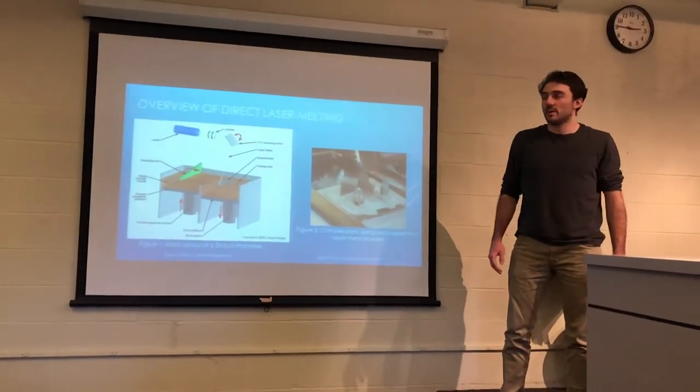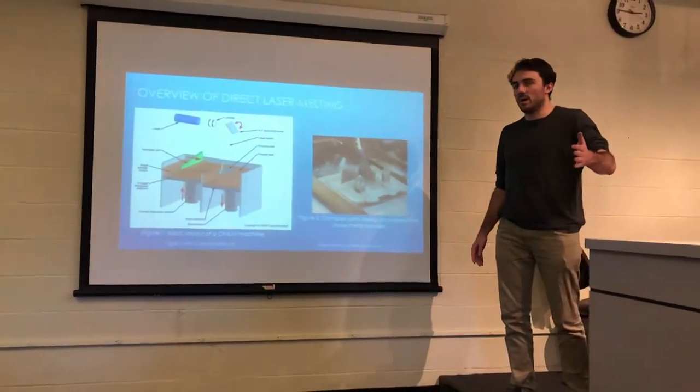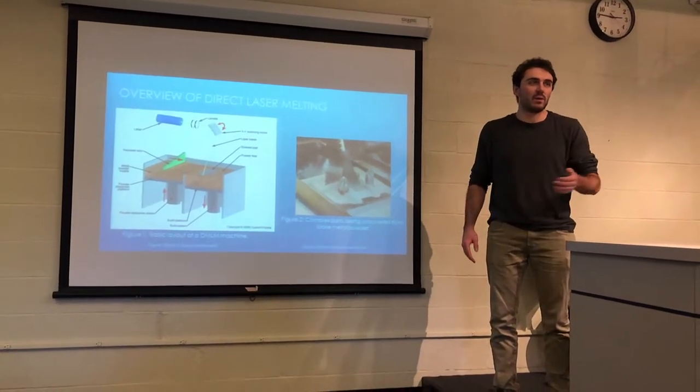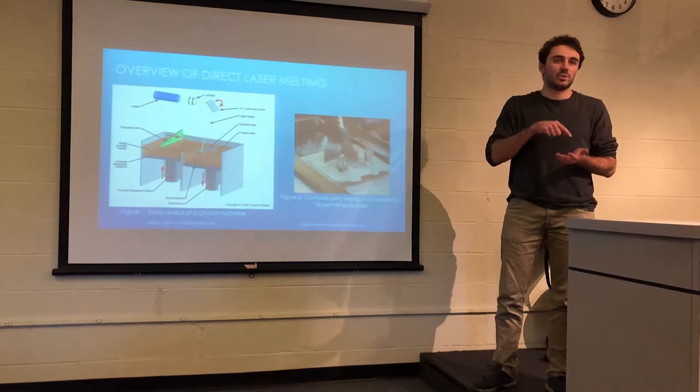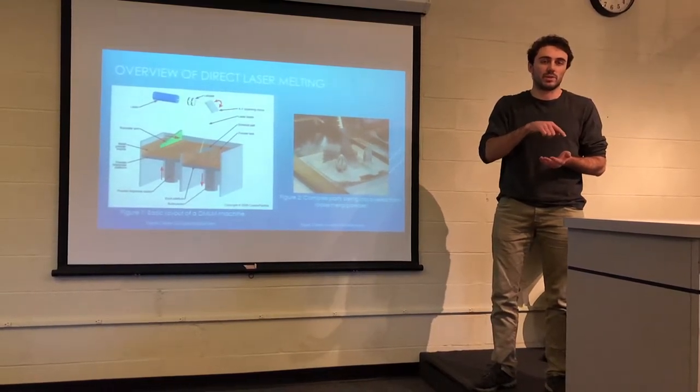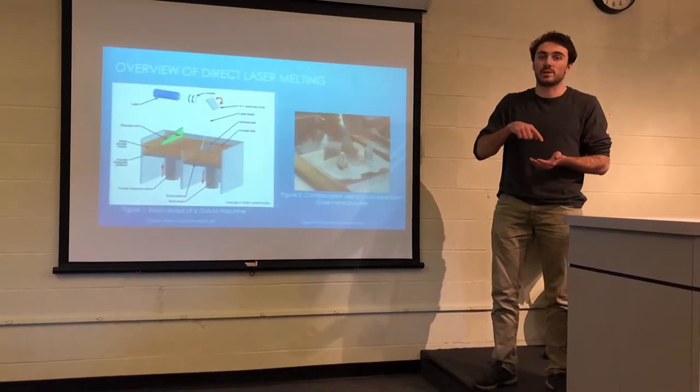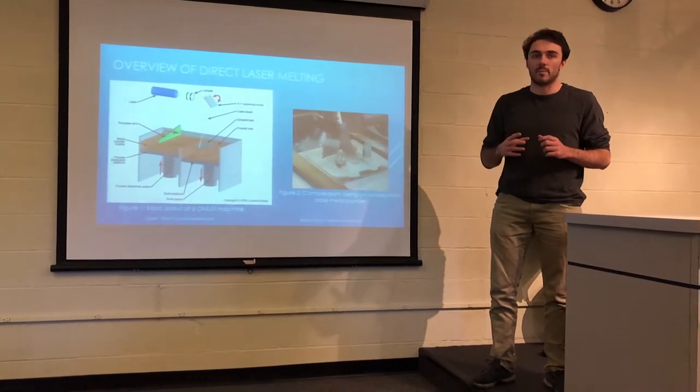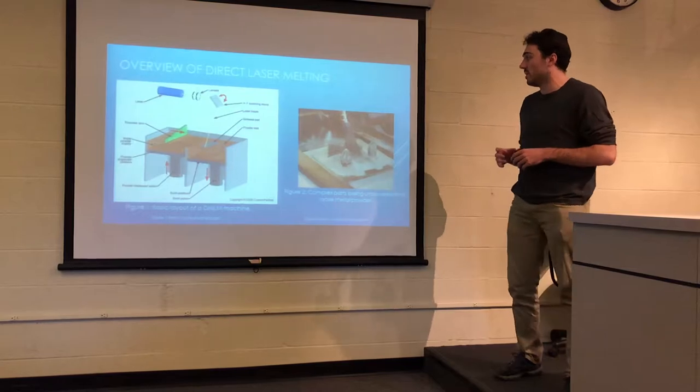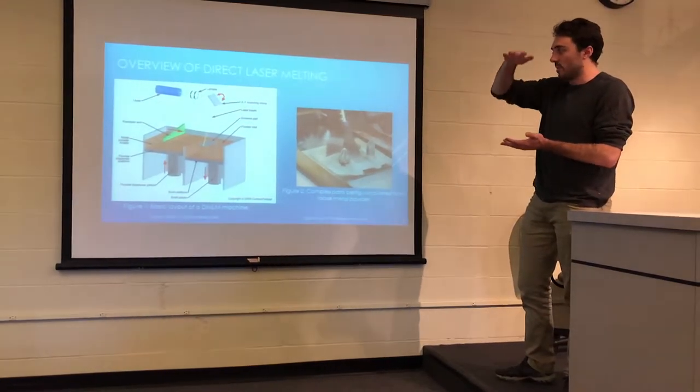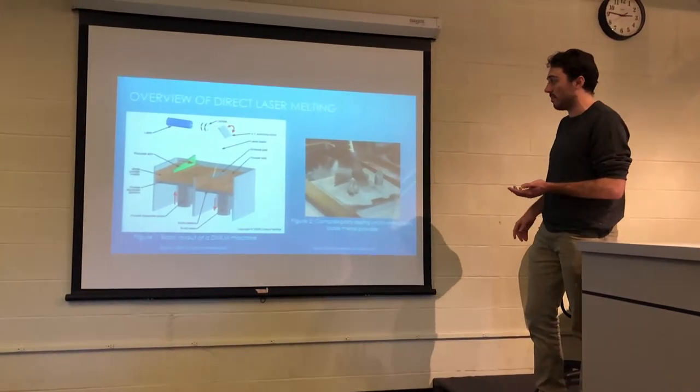Essentially it's a metal 3D printer. What you do is spread layers of powder one at a time, and then for each layer you shoot a certain geometry with the laser to melt the powder, and then it reforms as a solid metal. And then you just do that building up each layer to build the entire part.